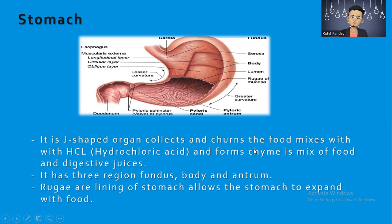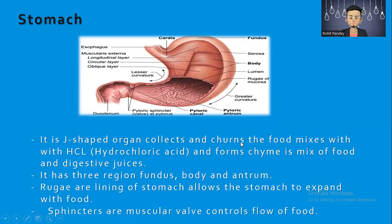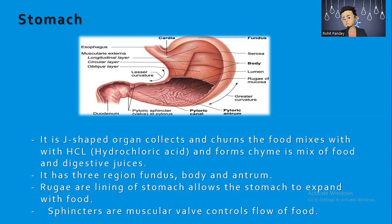When we have more food, the stomach expands itself instead of bursting. The sphincters are muscular walls that control the flow of food. Sometimes when the upper sphincter is not working properly, it causes a disease called GERD — gastroesophageal reflux disease — where HCl and stomach contents flow back upward.